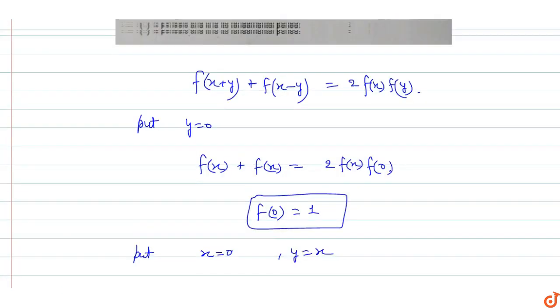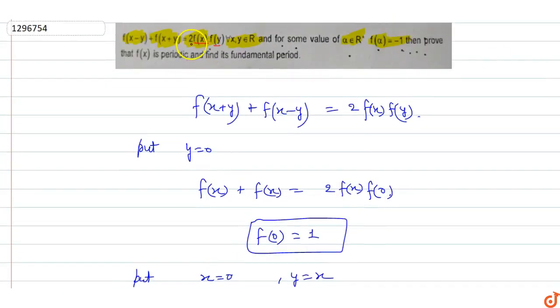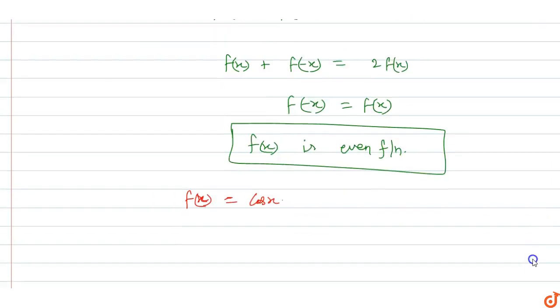f(x+y) + f(x-y) = 2cos(x)cos(y). We have to prove it, which means function f(x) is cos(x), an even function, and f(0) = 1.